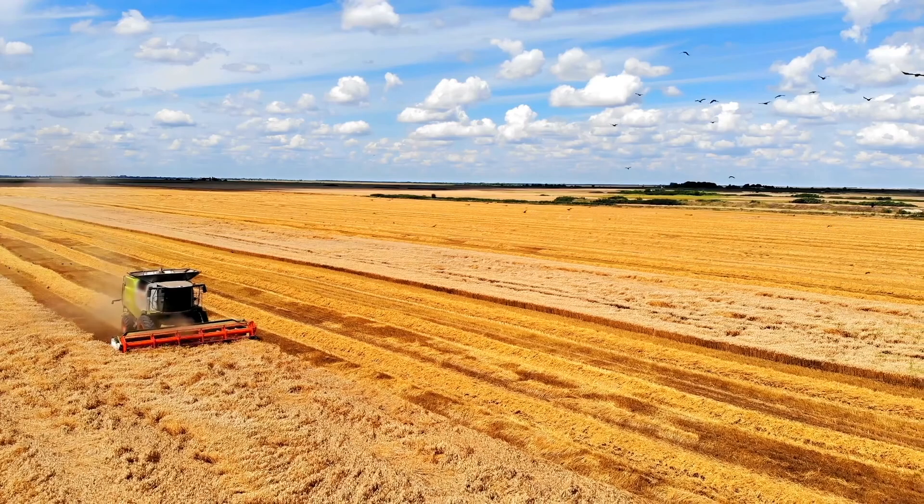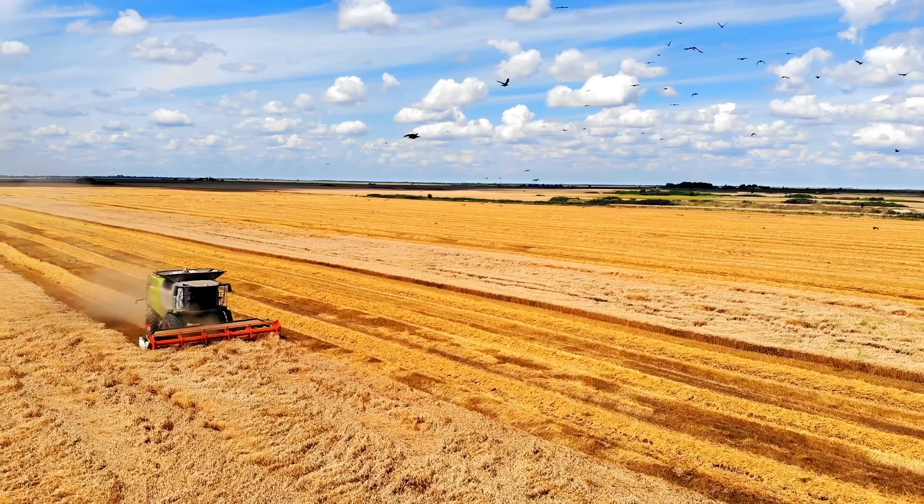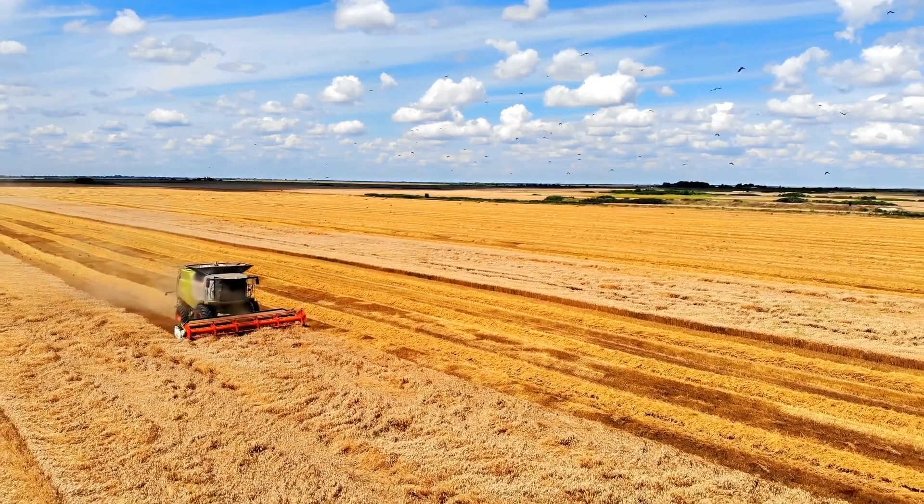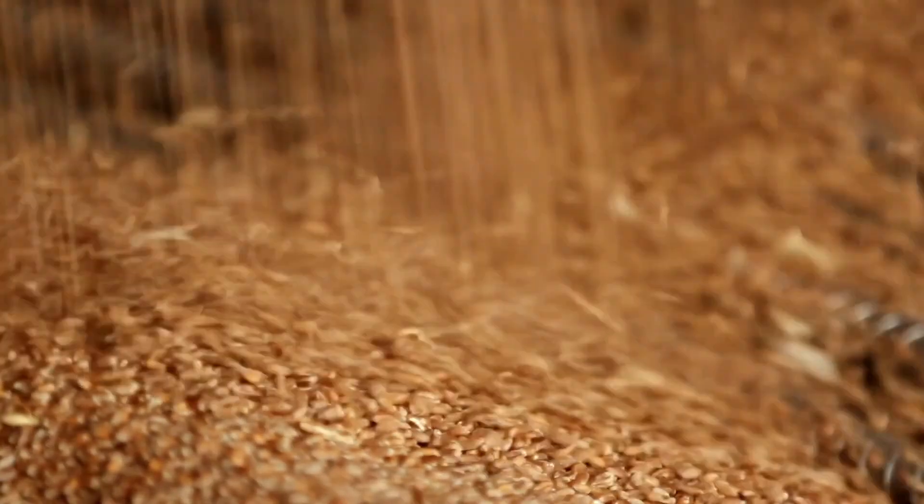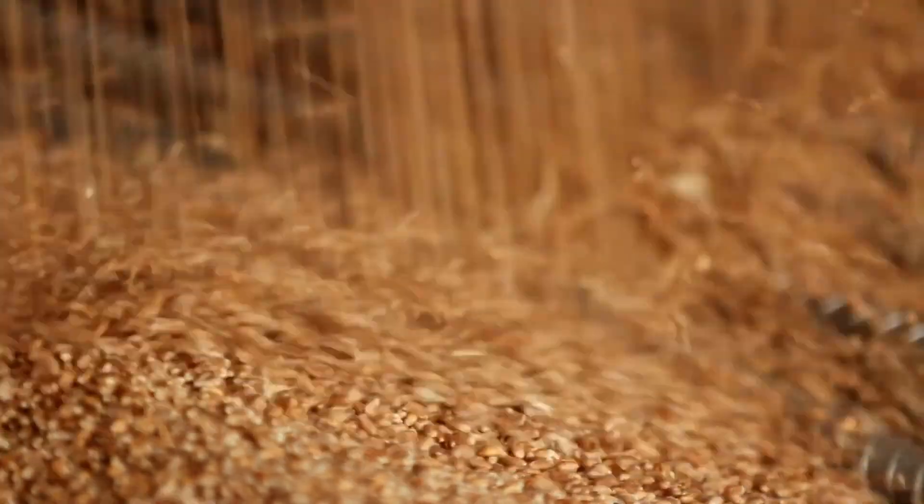Now that we've covered information on the major parts of the wheat plant, you have a better understanding on how each part works together to produce a healthful food for us. From the roots to the awn, all the structures serve a function in producing the kernels we use to make flour.